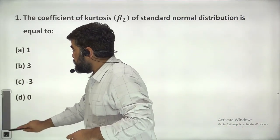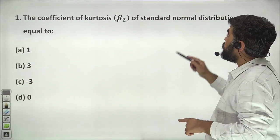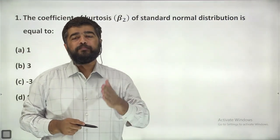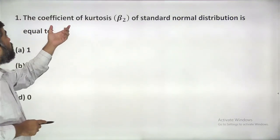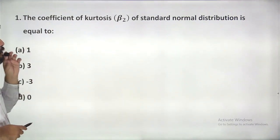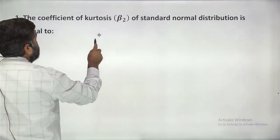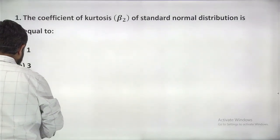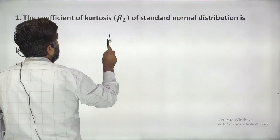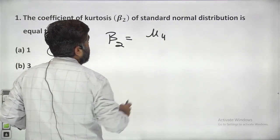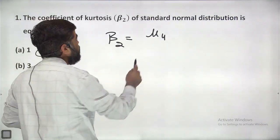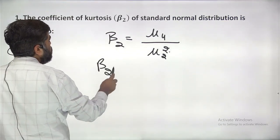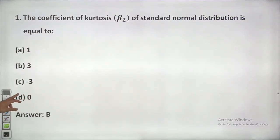The first question is: the coefficient of kurtosis, that is beta 2, of standard normal distribution is equal to what? Standard normal distribution is one where mean, mode, and median are equal. Beta 2 is defined as the 4th order moment divided by the square of the second order moment. For normal distribution, beta 2 should be equal to 3. So the answer will be 3.